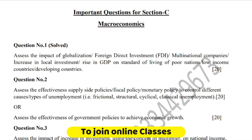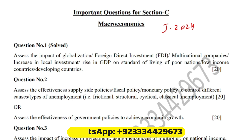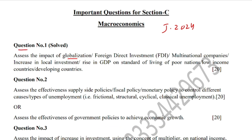In this class, I'll be discussing one more question relevant to macroeconomics. This is for the guest paper June 2024 exam series. Question number one says: assess the impact of globalization, foreign direct investment, multinational companies, increase in local investment, and rising GDP on the standard of living of poor nations, low-income countries, or developing countries.